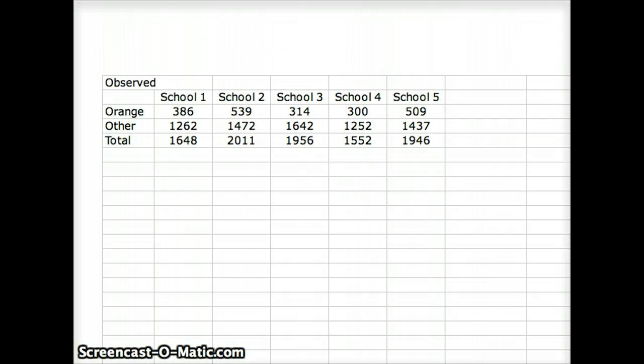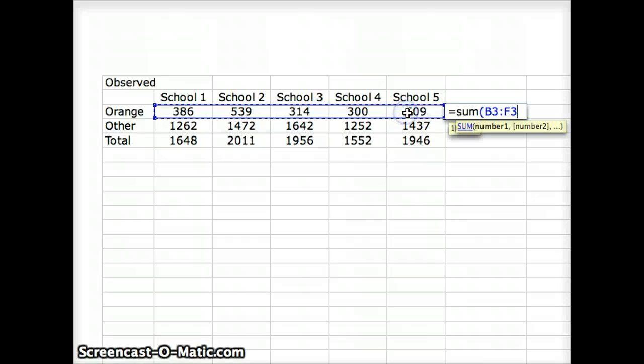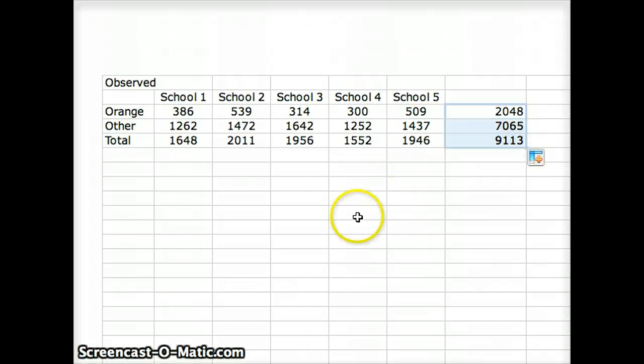I have the observed numbers. Of course, we need the totals. So, let's get the total number of orange from the five schools. We're going to say equals the sum of these five schools. That gives us 2,048, and we will continue that down in each situation.